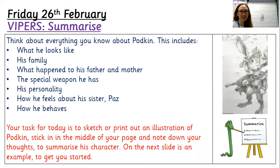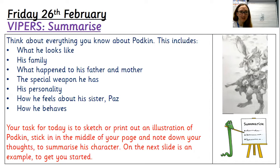Things I'd like you to think about in terms of summarising who Podkin is as a character include what he looks like — his physical appearance and something unique about him to do with his ears. You could include his family, what happened to his father and his mother, the special weapon that he has, his personality, his life, how he feels about his sister Paz and the relationship he has with her, and how he behaves. You may have other ideas too, and that's brilliant.